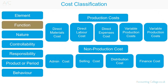Function costing involves grouping costs based on the different functions or activities of the organisation. For example, a business may classify costs into production costs or non-production costs. Production costs are those costs incurred when converting raw materials into finished or part-finished goods. Non-production costs are all costs not related with the production process.